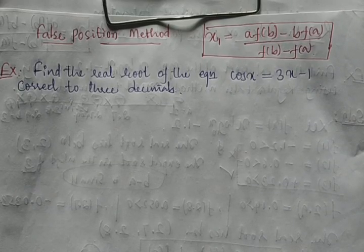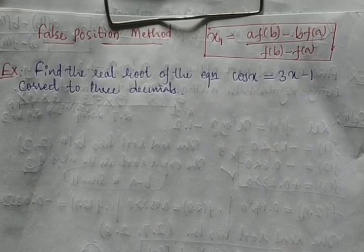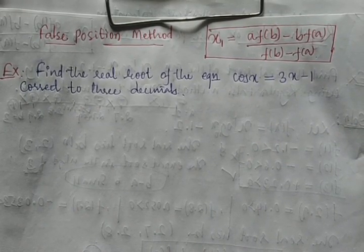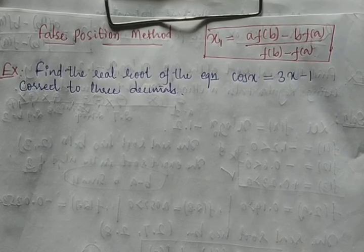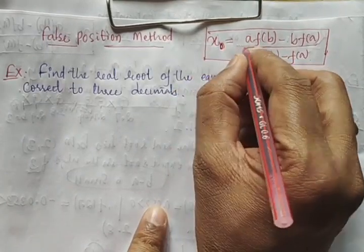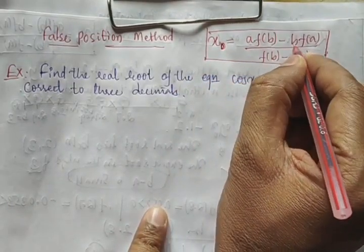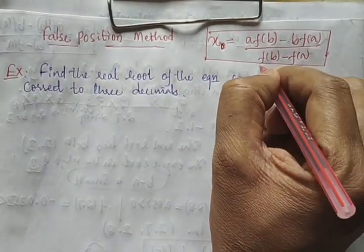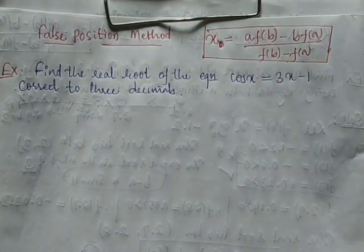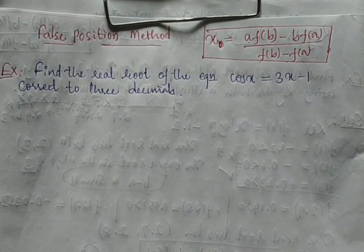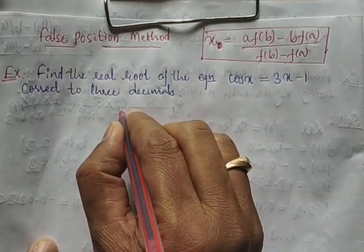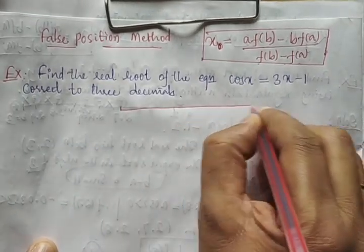We'll discuss an example on the false position method, which is also known as the Regula Falsi method. Its formula is: x = (a·f(b) − b·f(a)) / (f(b) − f(a)), where a and b are the two interval endpoints, and f(a) and f(b) are the functional values at those intervals.